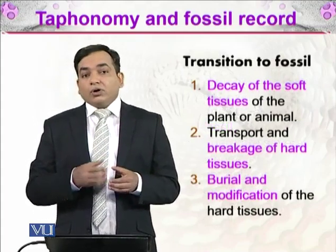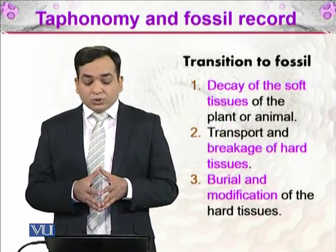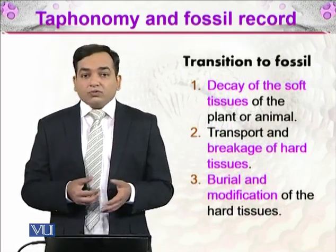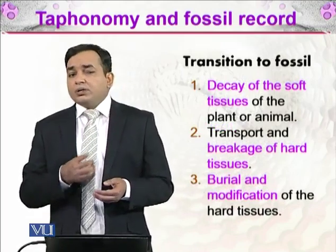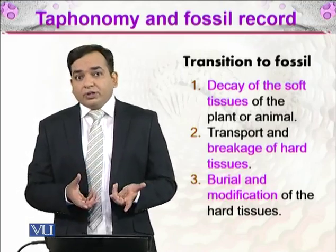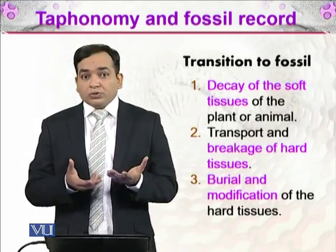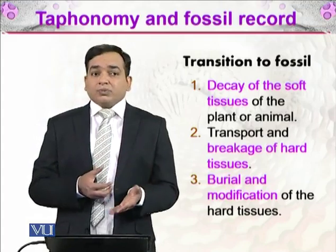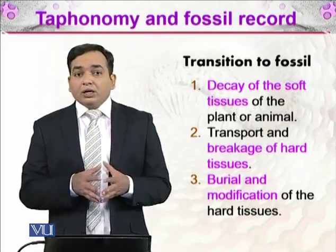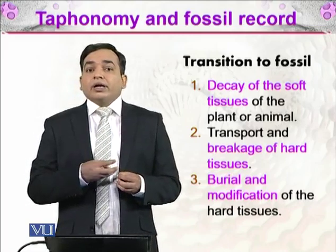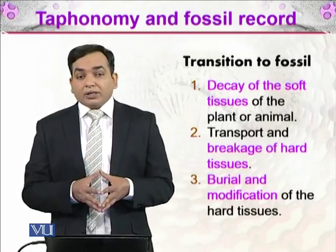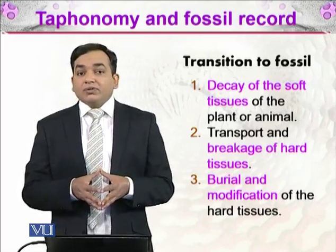First of all, there is decay of the soft tissue of the plant or animal. In the case of animals, that would be skin and sometimes muscles, while bones as the hard tissue will be preserved. In the case of plants, leaves are very soft and will decay, while the hard woody parts of the plants will be preserved.